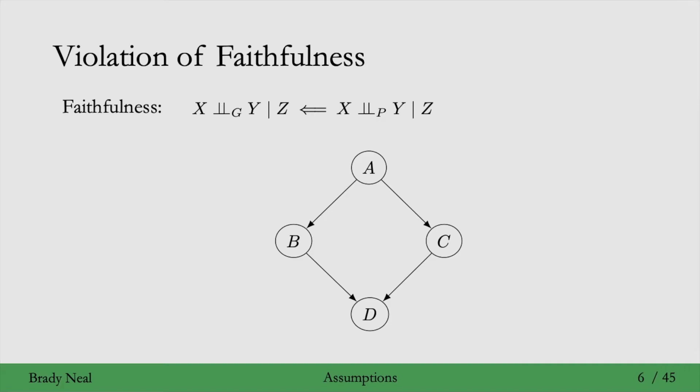We have a graph where the association flowing from a to d is canceled out along these two different paths. So the idea here is that the blue path cancels the red path in terms of the association flowing along them.